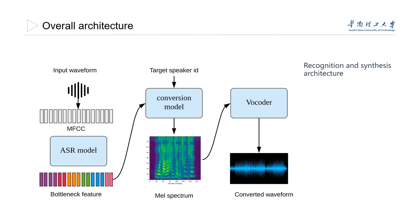The conversion model takes the bottleneck features together with the target speaker's ID as input and converts them into mel spectrograms. Finally, the neural vocoder generates waveforms from the converted mel spectrograms.